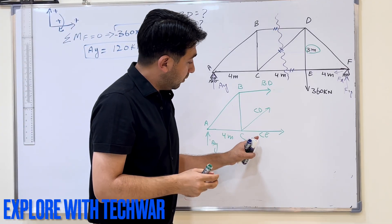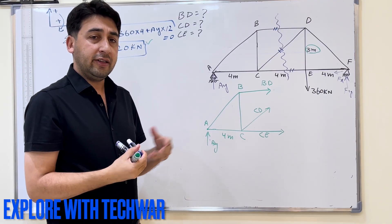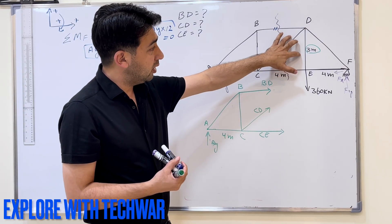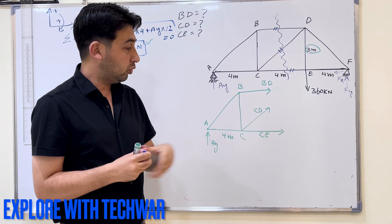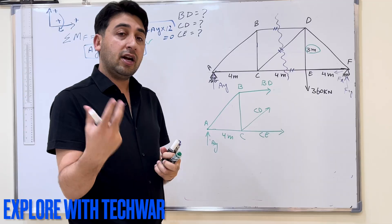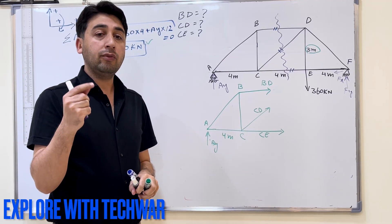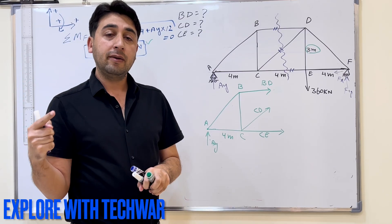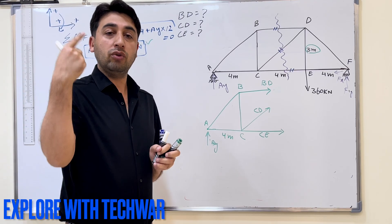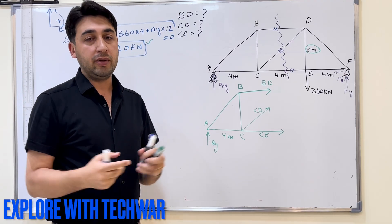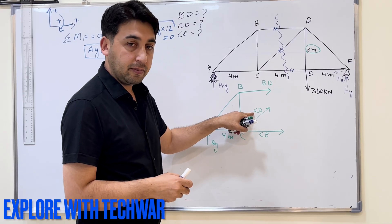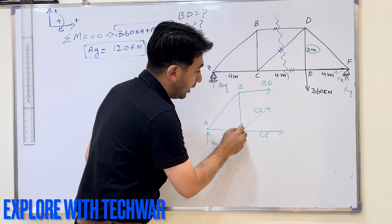As I mentioned in the previous video, we can solve unknown forces using the method of sections by taking moments about any point in this section. Since this truss is in equilibrium, any section of it is also in equilibrium. We have three unknowns. I will start from a point where two of the unknown forces pass through, so their moments are zero and I have only one unknown in the equation. From point C, both CE and CD pass through, so taking moment about C lets me find BD directly.